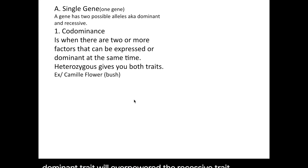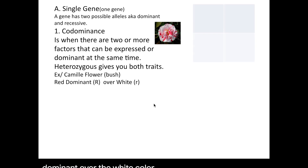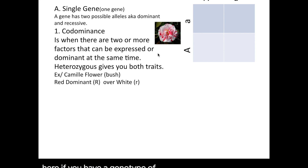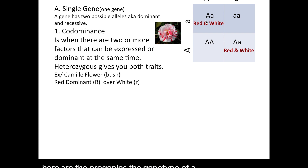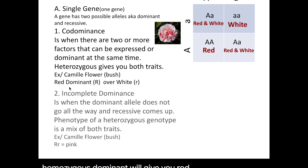For example, we're going to use the Camellia flower, which is a flower that blooms on a bush-like plant. The red flower will be dominant over the white color. However, in a heterozygous setup, it will be expressing both red and white. If you have a genotype of both heterozygous parents, here are the progenies. The heterozygous genotype with one uppercase and one lowercase allele will give you both red and white, homozygous recessive will give you white, and homozygous dominant will give you red.